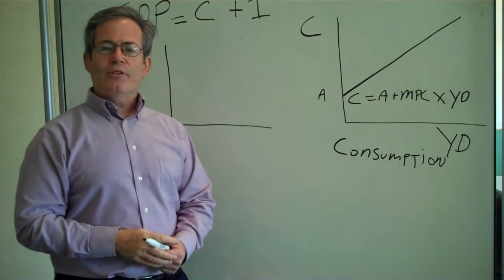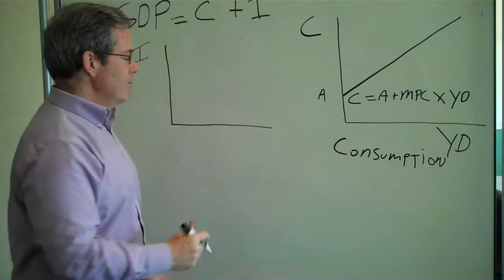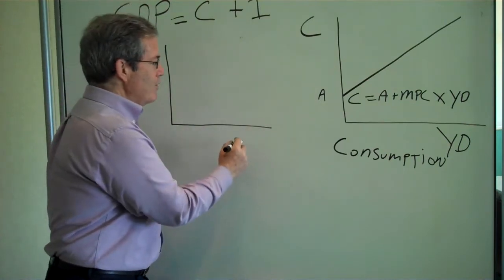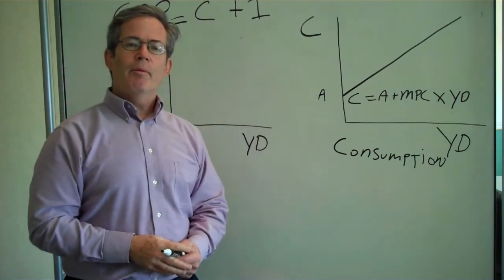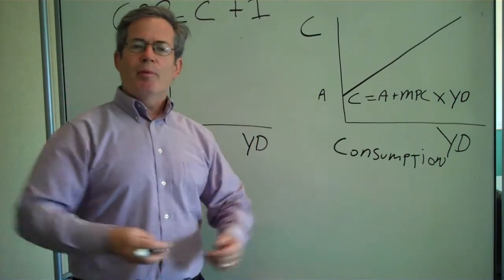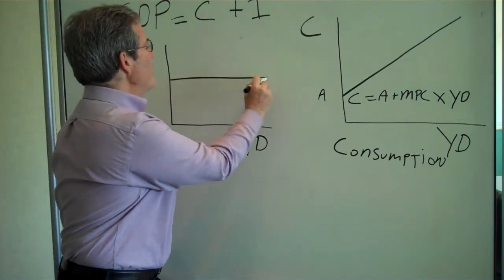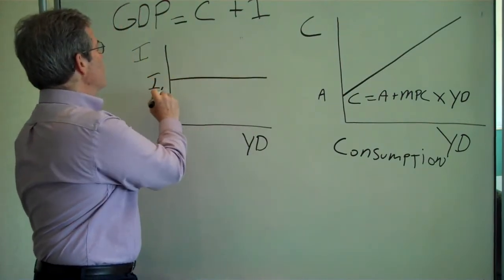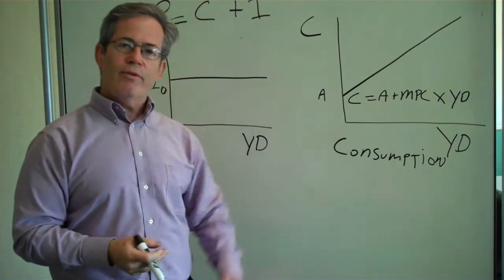Well, on the vertical axis, we'll put investment, just as over here we put consumption. On the horizontal axis, we'll once again put disposable income. And we'll say in the economy at any particular time, investment is just I-zero, a certain amount that people want to invest.